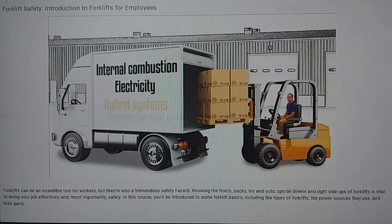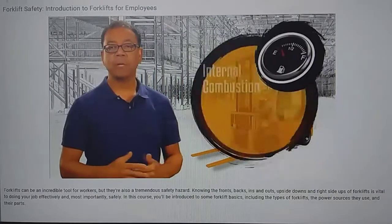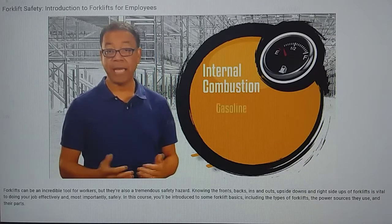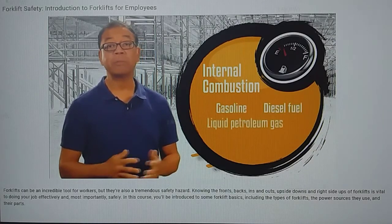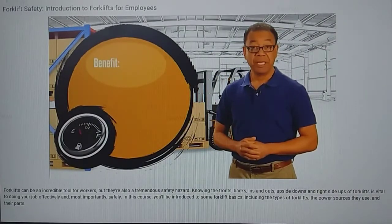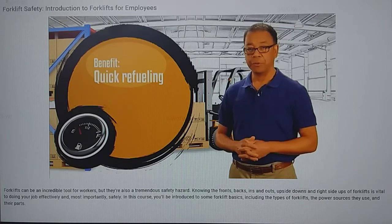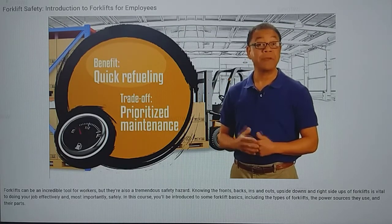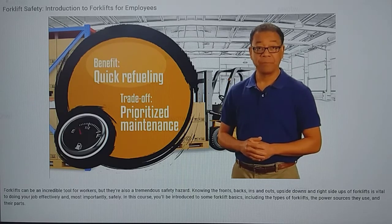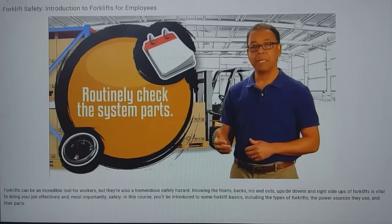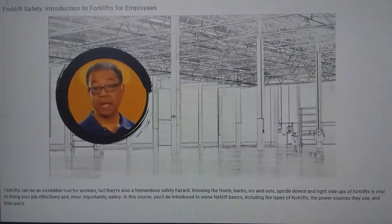Each type of power source has its own set of requirements, so it's important to understand each one. Internal combustion forklifts are the most common type, and they can run on a variety of fuels, including gasoline, diesel fuel, liquid petroleum gas, and compressed natural gas. One of the benefits of internal combustion engines is that they can be quickly refueled. The tradeoff is that they require more attention to maintenance, including checking regularly for fuel leaks. You'll also need to routinely check the system parts, which are more likely to become worn down and require replacement.